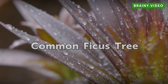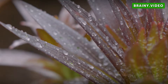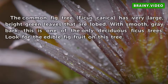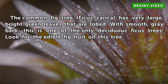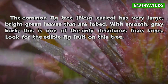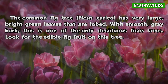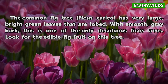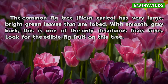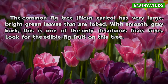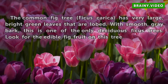Common Ficus Tree. The common fig tree, Ficus carica, has very large, bright green leaves that are lobed. With smooth, grey bark, this is one of the only deciduous ficus trees. Look for the edible fig fruit on this tree.